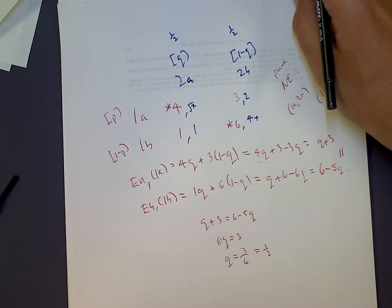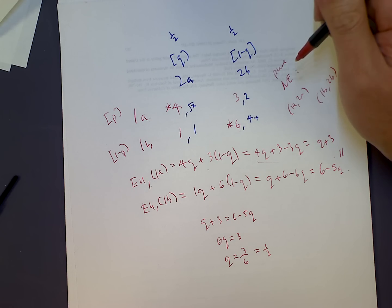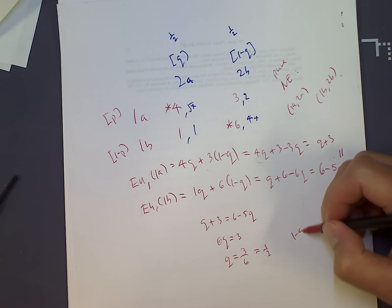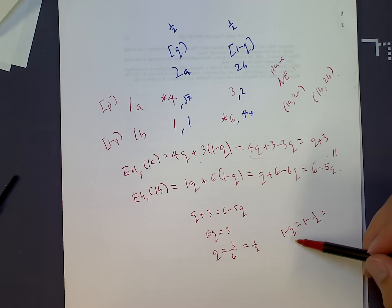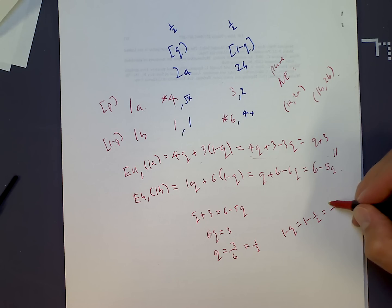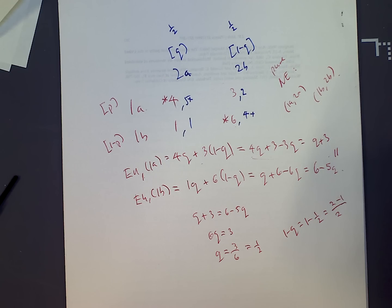If Q is 1/2, then 1 minus Q equals 1 minus 1/2, which is 1/2. So both values are 1/2.